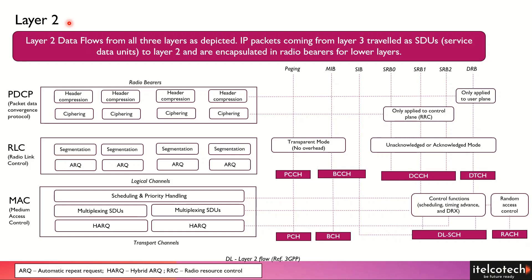Let's talk about the Layer 2 protocol in more detail. We have understood that there is a physical layer, Layer 1, with different channels having different functionalities. At Layer 2, information from the lower layer is taken towards the higher layer or vice versa. Information coming from the higher layer in terms of packets at Layer 3 comes down to Layer 2 and travels as a service data unit. Those packets are converted into SDUs, with segmentation and concatenation happening before passing back down to the physical layer.